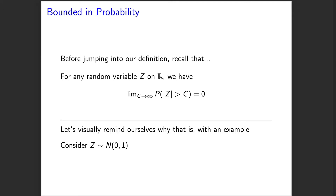This is just a way of saying that no matter how wide the distribution of z, eventually we can choose a c so big such that there's only a tiny amount of mass outside of it, and that tiny amount gets small as c increases.